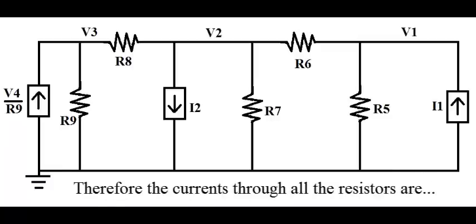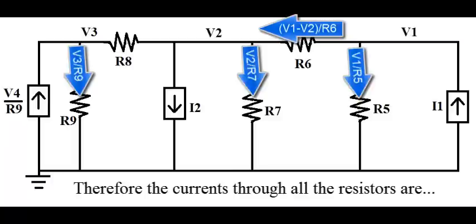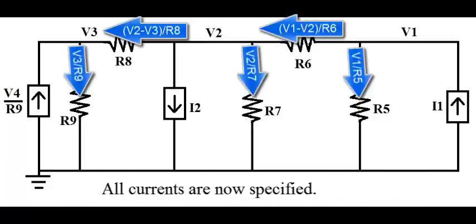Therefore, the currents through all resistors are V3 divided by R9, V2 divided by R7, V1 divided by R5, V1 minus V2, the quantity, over R6, V2 minus V3, the quantity, over R8. All currents are now specified.